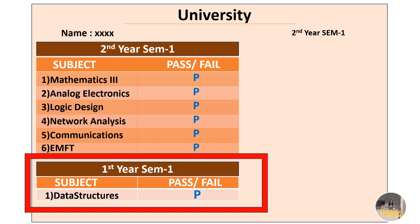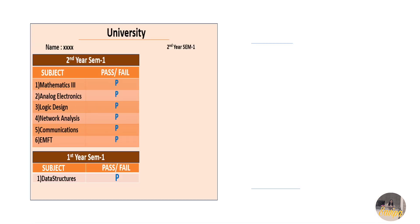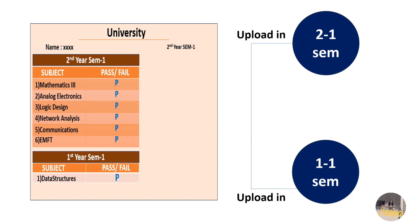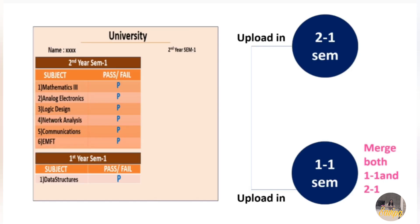In this case, for the 2-1 SEM section, you upload the 2-1 sheet as it is. But for the 1-1 SEM section, you need to merge both the 1-1 and 2-1 mark sheets and upload that merged file in the 1-1 section. This way, Accenture will see you had a backlog in 1-1 and that you cleared it — with the cleared information shown in the 2-1 sheet.